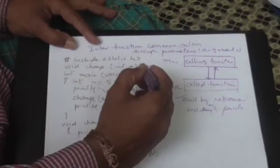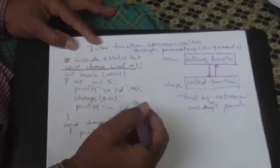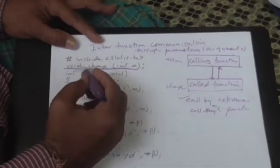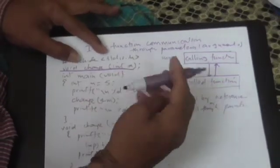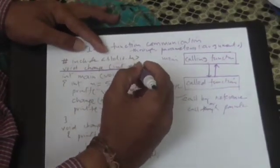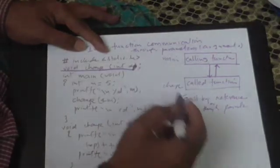So here pay attention to this function called change. We are telling that the void function change and I said int asterisk. You can see writing a variable name is optional. If you want, you can write a variable name like p. It is optional.